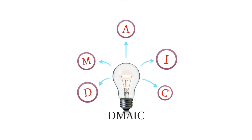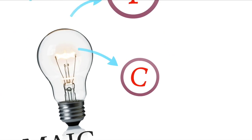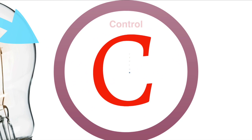Welcome to the final phase of the DMAIC Methodology. This is the C, or Control phase. This phase focuses on sustaining the improvements made in the previous DMAIC phases we've discussed in the series.